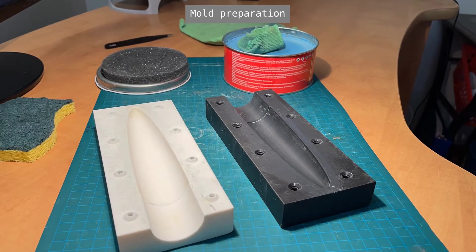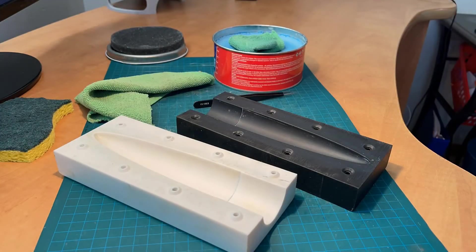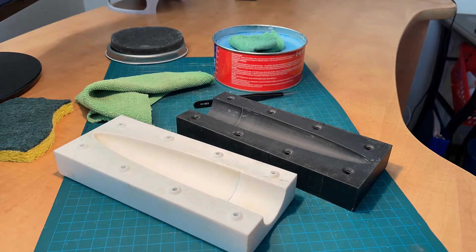Using high-temperature mold release wax, apply a thick layer and work the wax into the surface evenly. The molds should appear to dry and haze after about five minutes, at which time a microfiber cloth should be used to polish the entire surface.